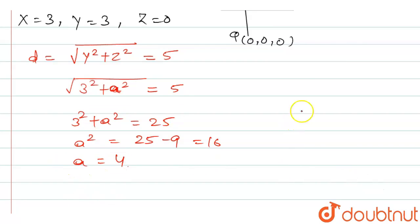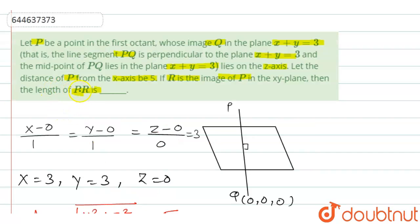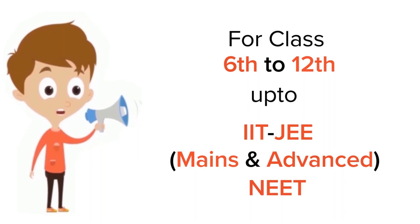Since P is 4 above the z-axis and R is the image of P in the xy-plane, R is 4 below. So the total distance PR equals 4 plus 4 equals 8. Therefore, the length of PR equals 8. I hope you understand the explanation. Thanks for watching.